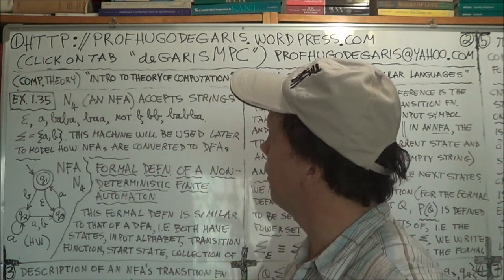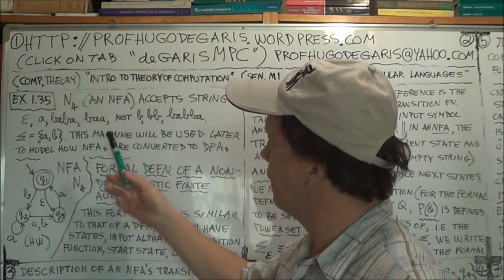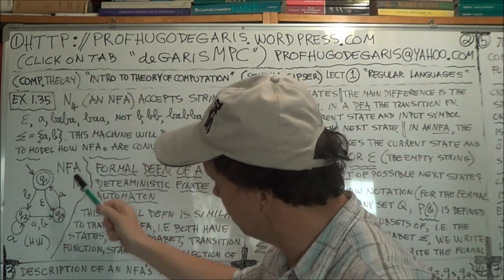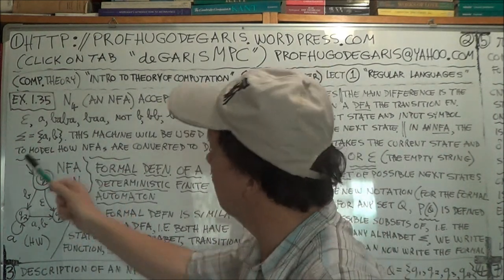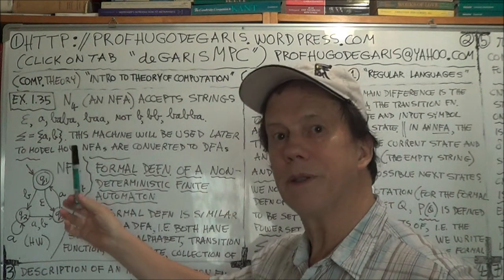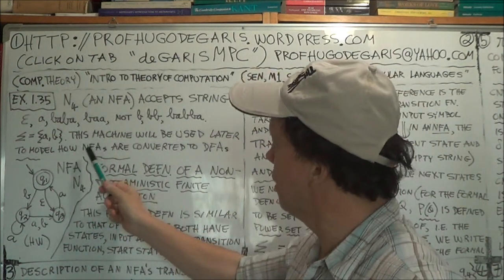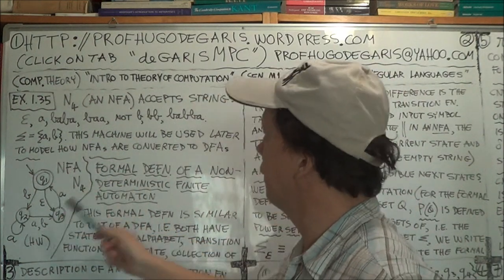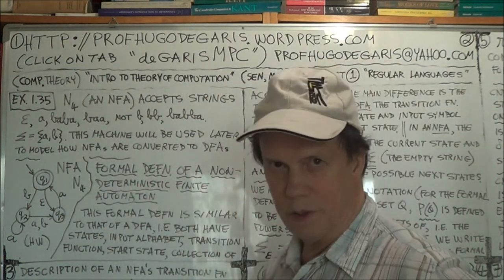And the textbook, Sipser, he makes a comment. This machine, the N4 in other words, this thing, it'll get used later. We'll come back to it and we'll use it to model how an NFA, because this is an NFA, can be converted to a DFA.